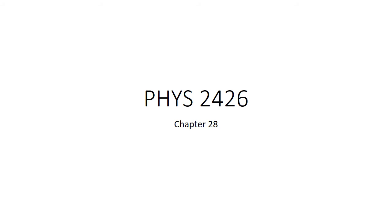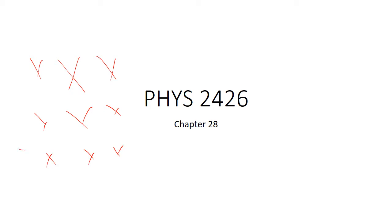Let's consider something moving in a magnetic field at an angle to the magnetic field. Up to this point, we have had a magnetic field and something moving perpendicular to it, going around in circles — cyclotron motion.